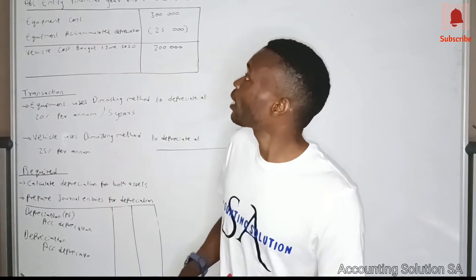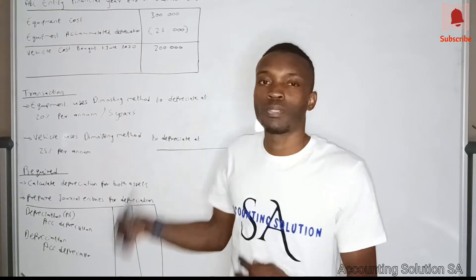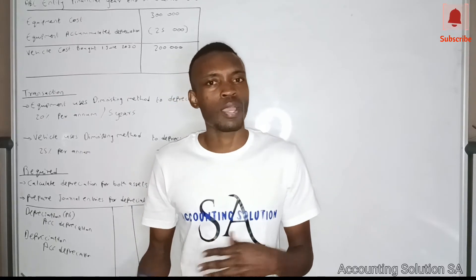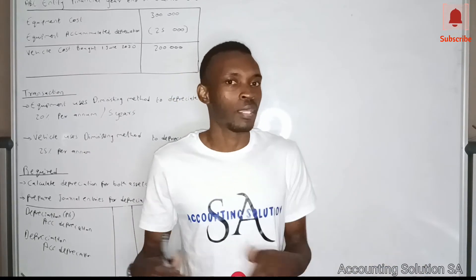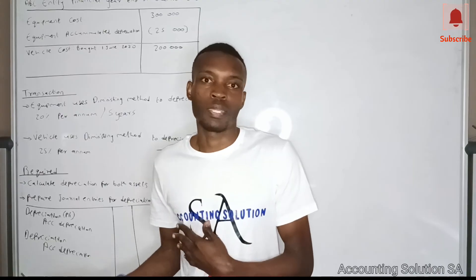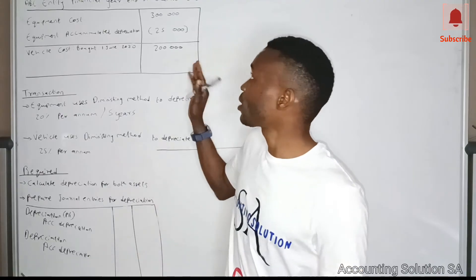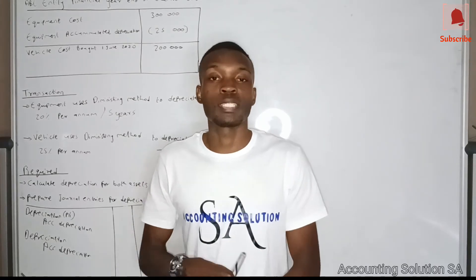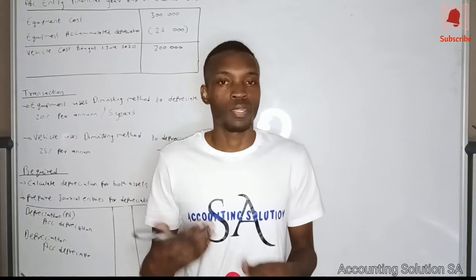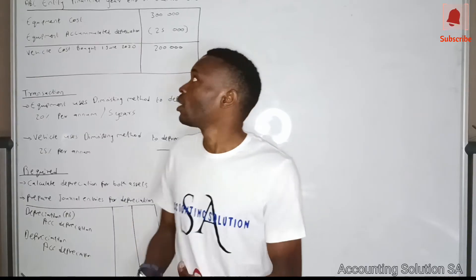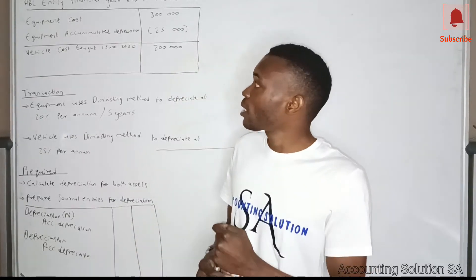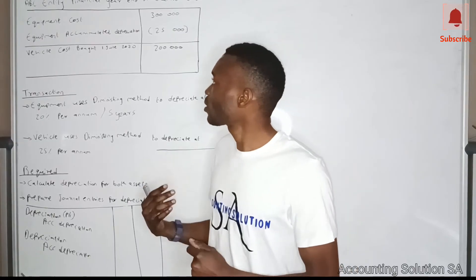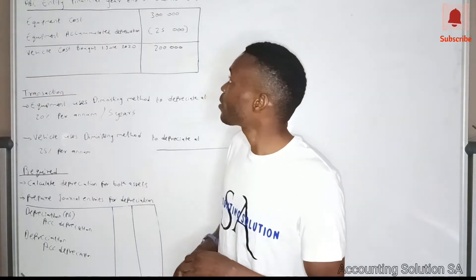Number one: ABC entity financial year end is 31 December 2020, so you have to make sure that you understand when our accounting period started and when it is going to end. Because it's ending 31 December 2020, we know that our reporting period is 12 months, which means it started 1 January 2020.